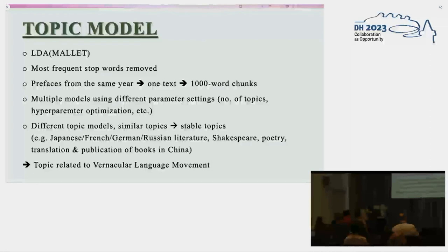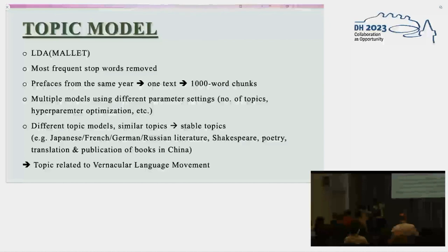We then trained multiple topic models on these chunks using different parameter settings. We observed that several topics are similar and always occur across multiple models, so we considered them stable topics and used them for further analysis. For example, topics related to foreign literature, Shakespeare, poetry, and so on. After this first pass with our corpus, we got a lot of interesting output.